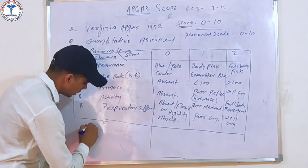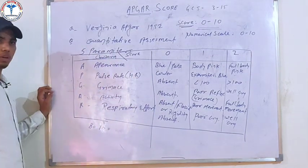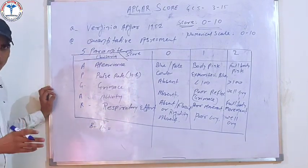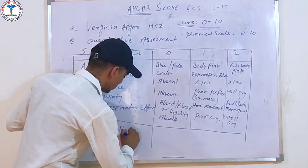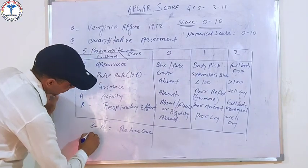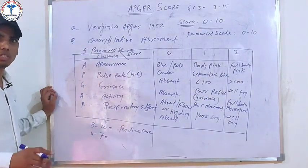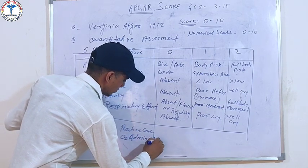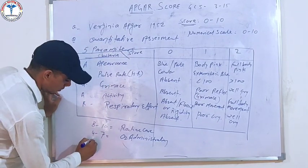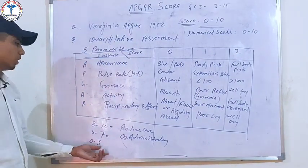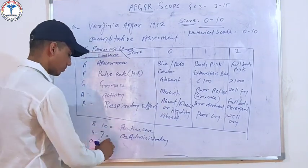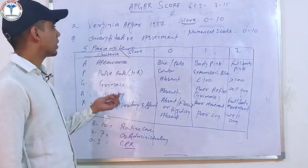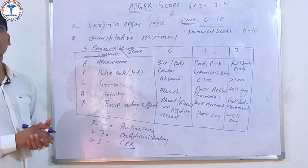If the score is 8 to 10, the condition is good and routine care is needed. If the score is 0 to 7, oxygen administration is required along with routine care. If the score is 0 to 3, immediate CPR is needed.